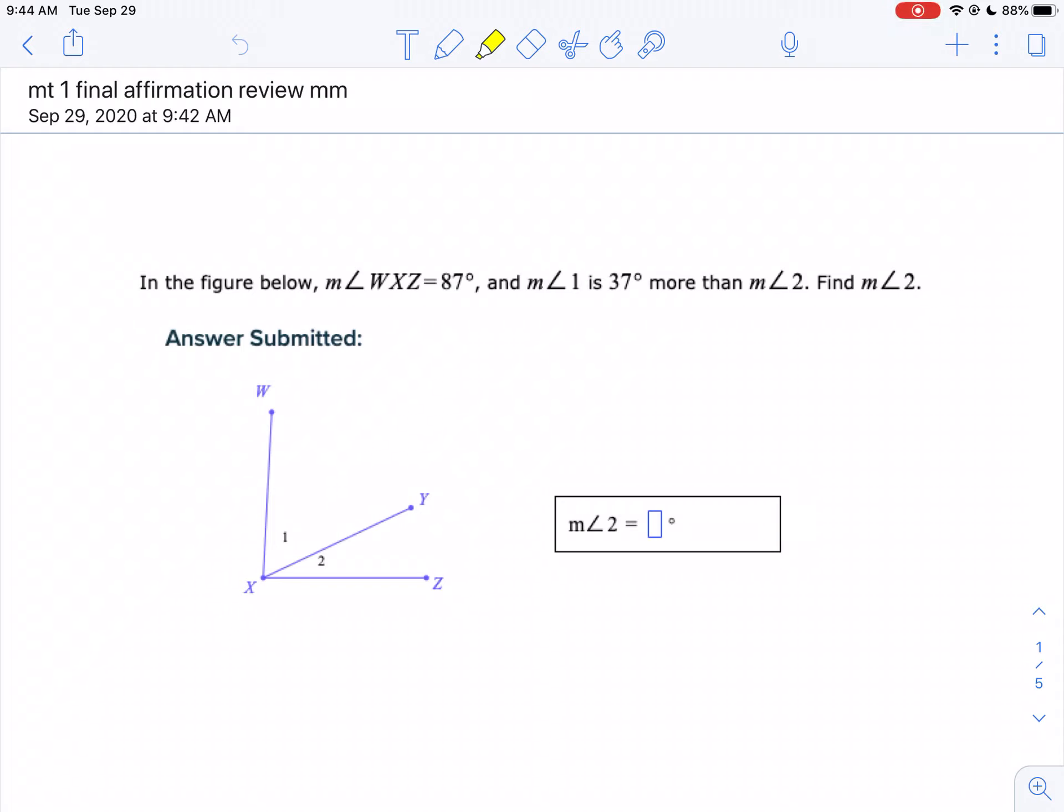Hi, we're going to review your MT1 final affirmation right now, and I'm also going to model the type of work I want to see when you submit your answers. I noticed I went to the second time you took this test, but it looks like you've just given up because you weren't improving, so we're just going to go over these questions. Now, we're told on question one, angle WXZ is 87 degrees, so I would draw this picture out and label WXZ as 87 degrees.